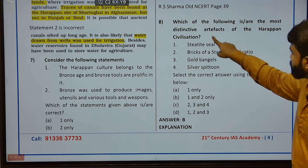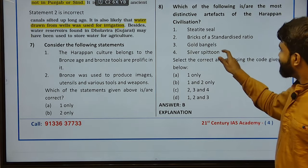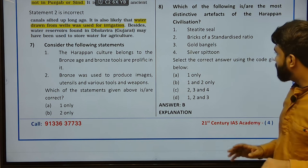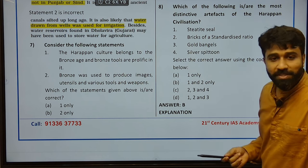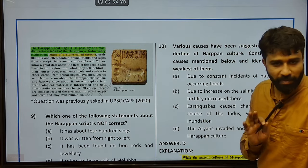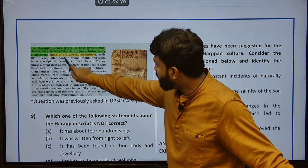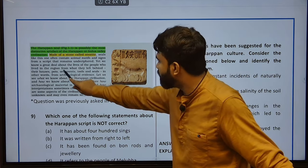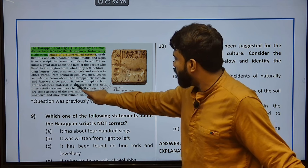Which among the following is the most distinctive artifact of the Harappan civilization? Stated seal — next, bricks of a standardized ratio. And third — gold bangles. Next, silver spittoons — no. The Harappan seal is possibly the most distinctive artifact, made of a stone called steatite. Ornaments, tools and seals were left behind in their houses mostly. Archaeological evidence is also showing knowledge about the Harappan civilization.